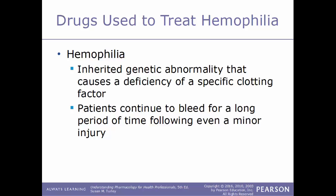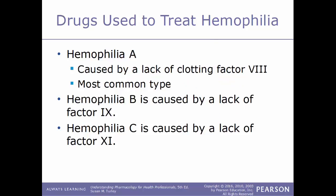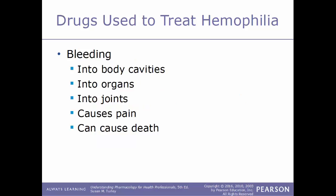Now we will talk about drugs used to treat hemophilia. Hemophilia is an inherited genetic abnormality that causes a deficiency of a specific type of clotting factor. Patients will continue to bleed for a very long period of time following even a very minor injury. There are various types of hemophilia depending on what clotting factor is affected: hemophilia A is caused by a lack of clotting factor number 8 and is the most common type; hemophilia B is caused by a lack of clotting factor number 9; and hemophilia C is caused by a lack of factor number 11. When an injury occurs, bleeding can get into body cavities, organs, and joints, causing severe pain or even death if not treated quickly.